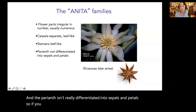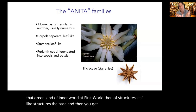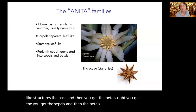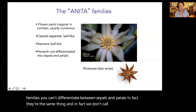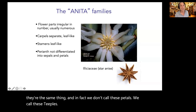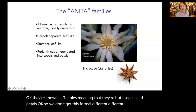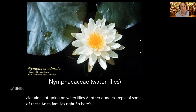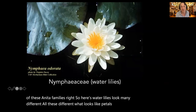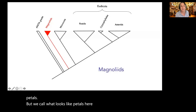The perianth isn't differentiated into sepals and petals within ANITA families. Instead we call them tepals — they are both sepals and petals together. Water lilies are another example from the ANITA grade; what looks like petals are actually tepals. We don't spend a lot of time on the ANITA grade because time is limited, but let's walk up the rest of the phylogeny.